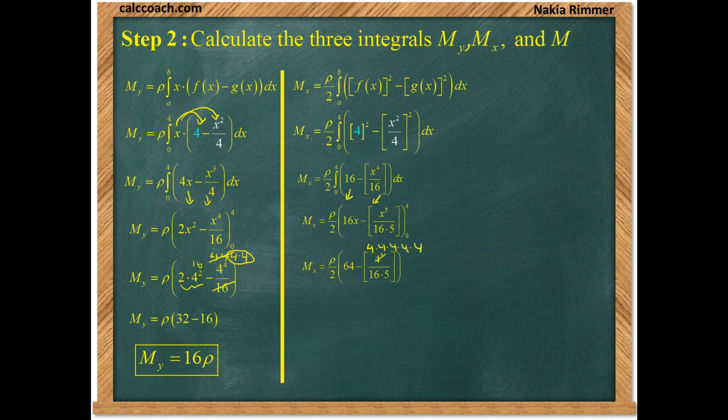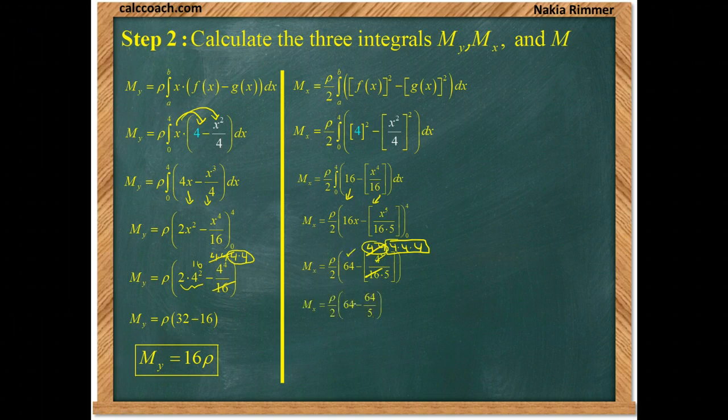5 copies of 4 here. And 2 of them will cancel with the 16. We would still have 3 of them around 4 cubed to 64. So, that would be 64 minus 64 over 5.